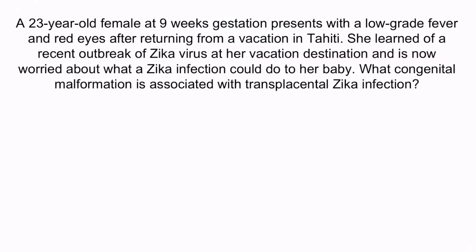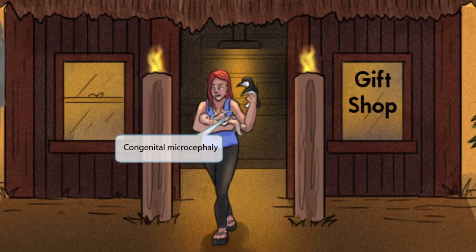Now let's do a question to apply what you've learned. A 23-year-old female at 9 weeks gestation presents with a low-grade fever and red eyes after returning from a vacation in Tahiti. She learned of a recent outbreak of Zika virus at her vacation destination and is worried about what a Zika infection could do to her baby. What congenital malformation is associated with transplacental Zika infection? From the question stem, she has fever and conjunctivitis consistent with Zika. The answer is microcephaly — recall the tiny penguin toy. Penguins have relatively tiny heads, so microcephaly. With that, you have learned all the details you need to memorize for Zika virus.